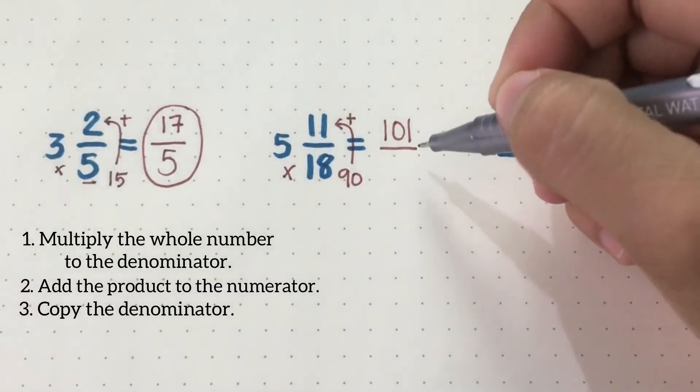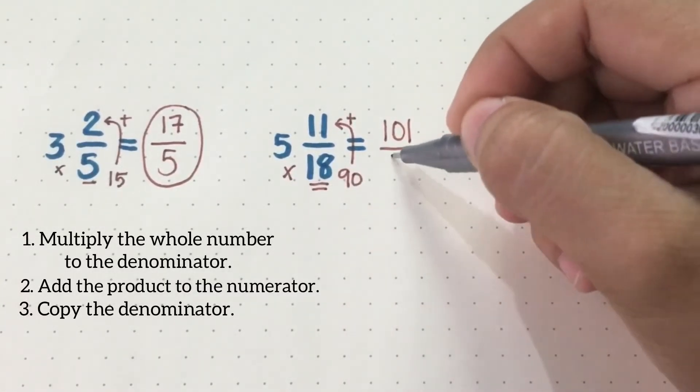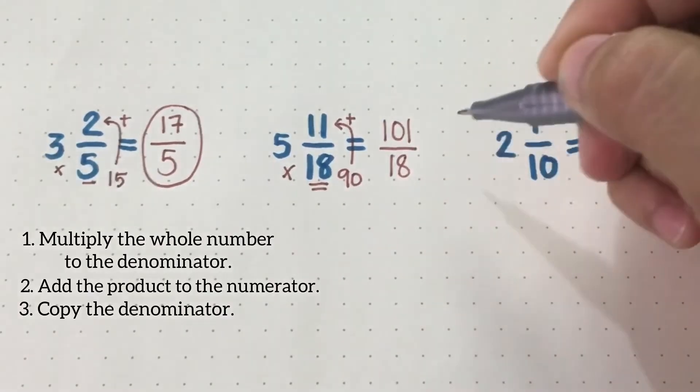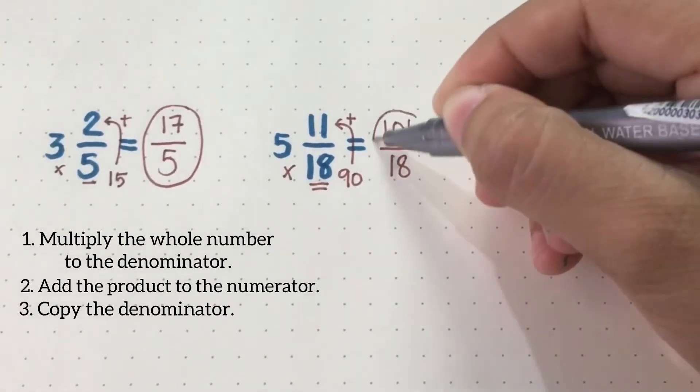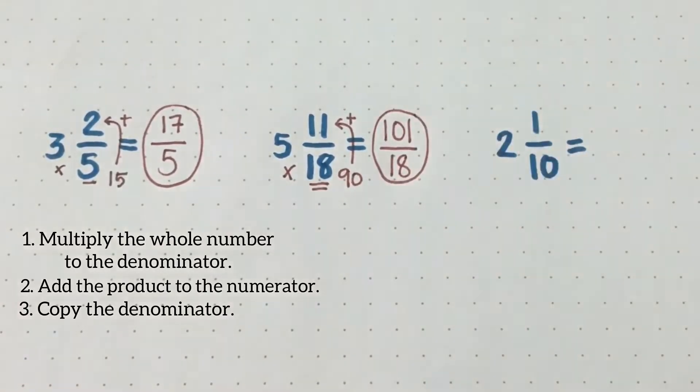And then, copy the denominator given, which is 18. So the answer is 101 over 18.